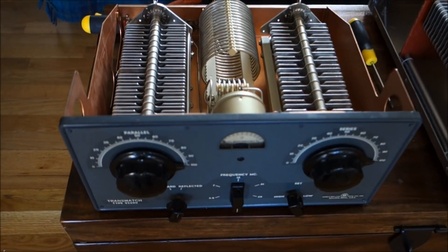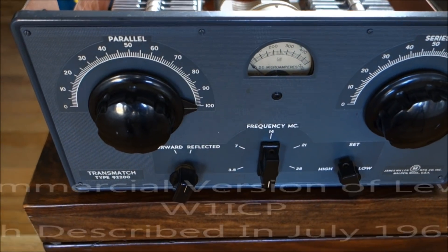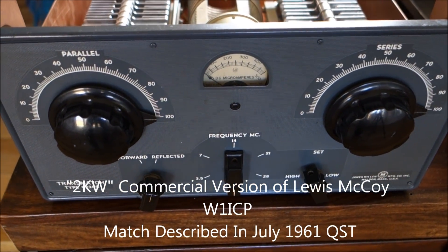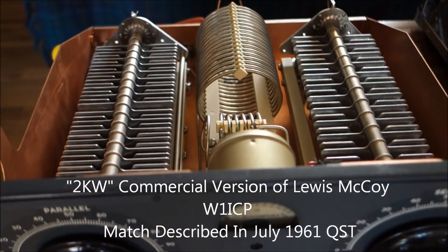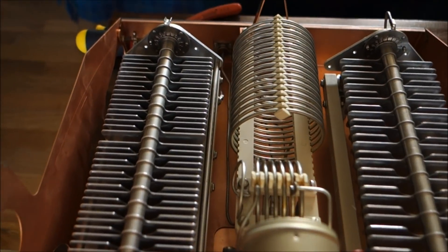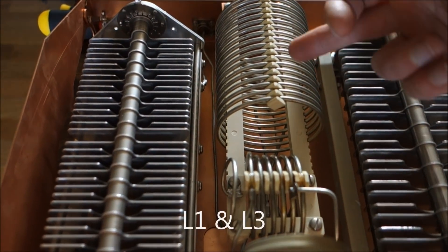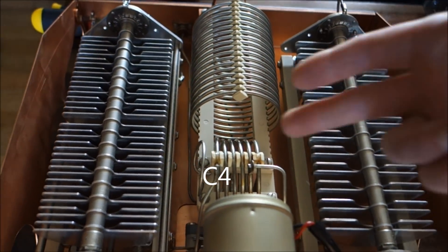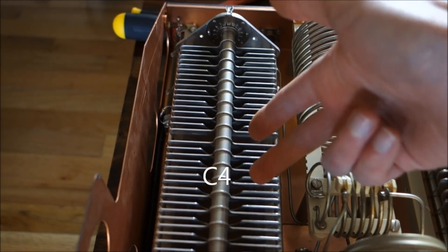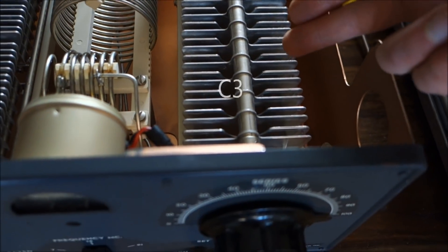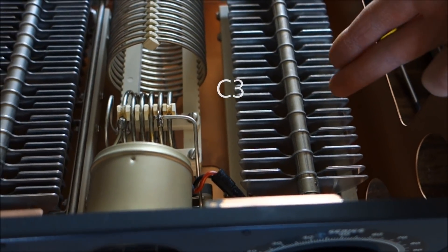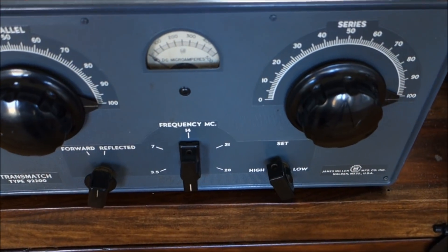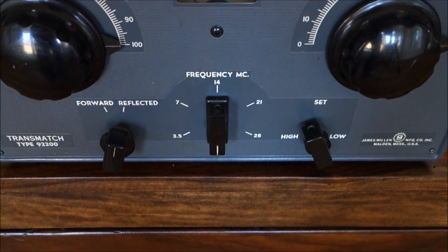So we'll start with the James Millen 92200 transmatch. It uses a fixed tapped roller inductor with the parallel condenser. Actually this is a dual capacitor and series capacitor on the output. It's an unbalanced antenna tuner.